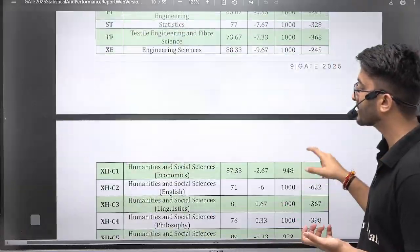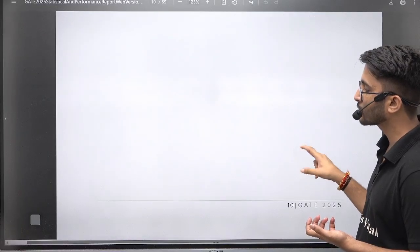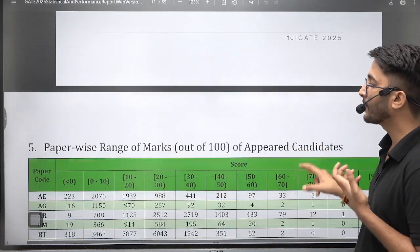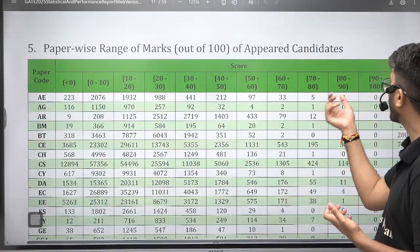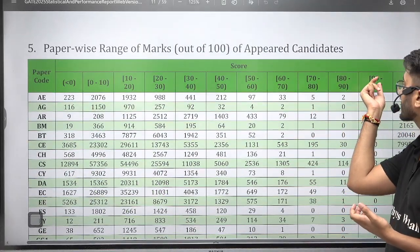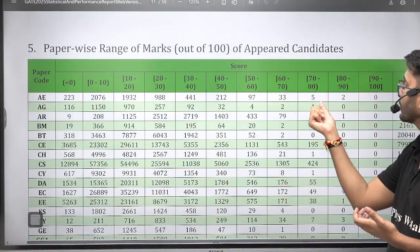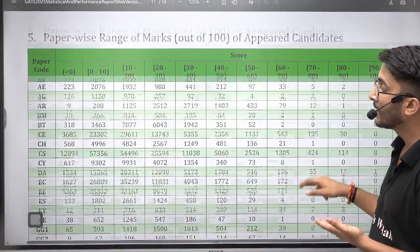Here you can also check there are many other details they provide like paper-wise range of marks out of 100. So how many students are getting marks in a 90 to 100 range, 80 to 90 range, 70 to 80 range. This list is also available here.